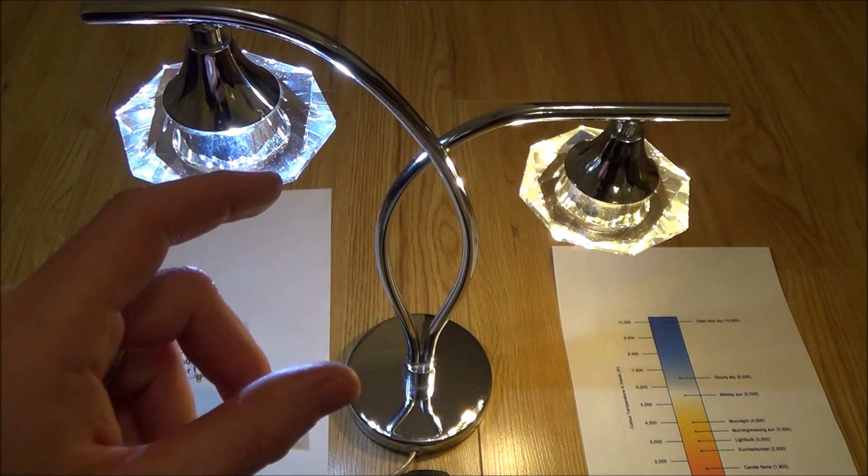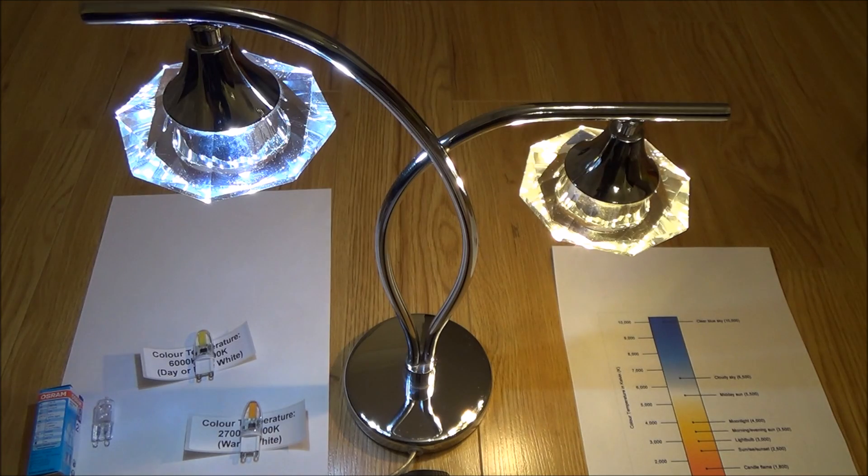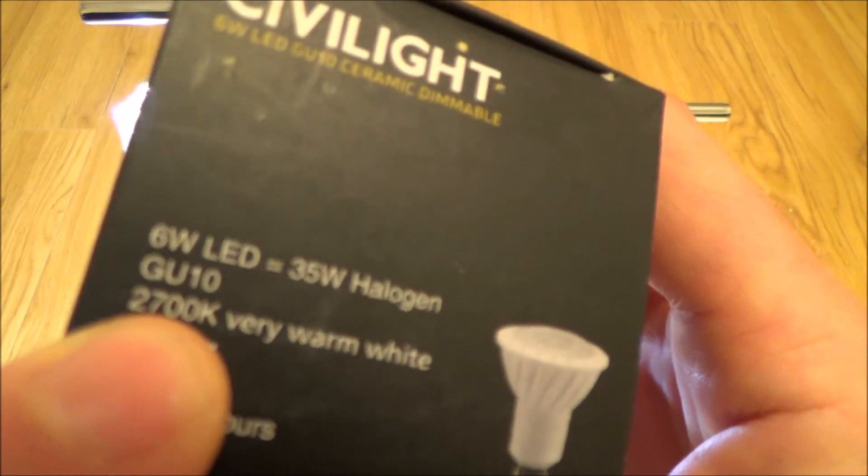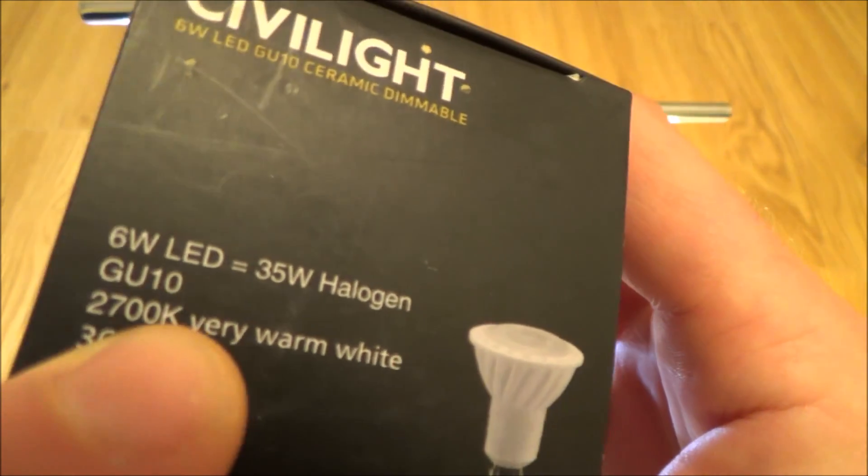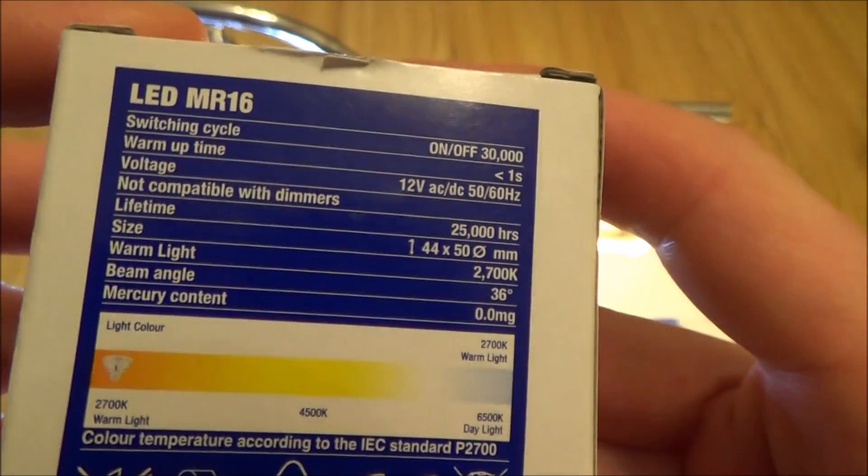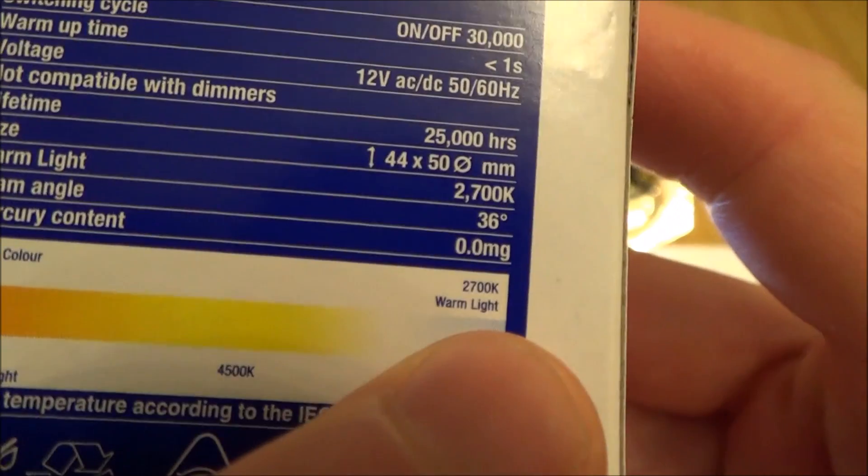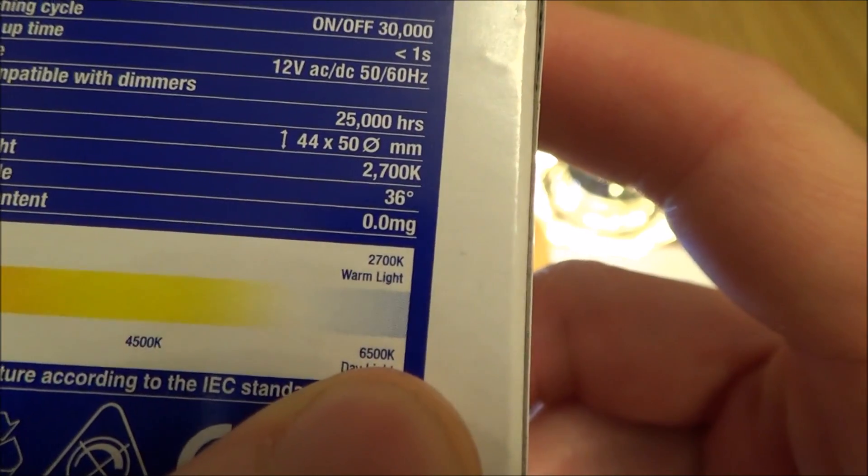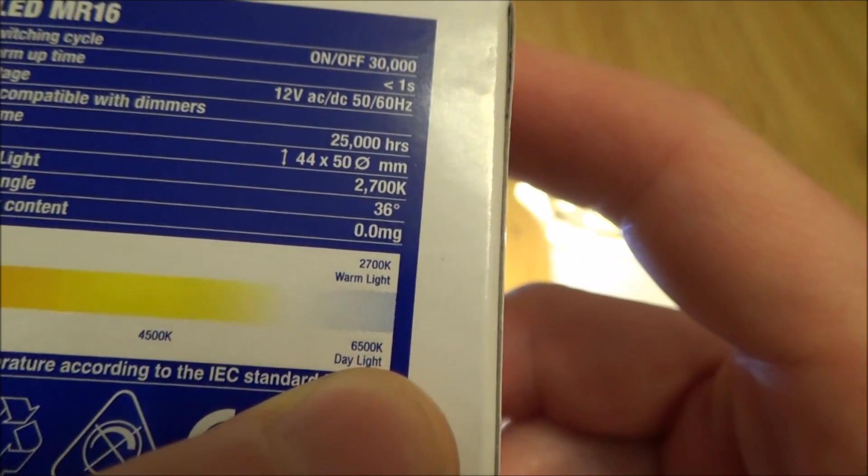Now the best thing to go by is the number with the K after it. So if you look at lights most of the time it will have for example 2700K. Now this company is calling it a very warm white. This one here is a 2700K warm light and then they would have for example 6500 would be called a daylight.